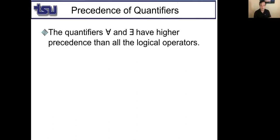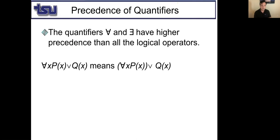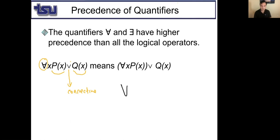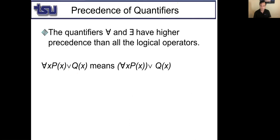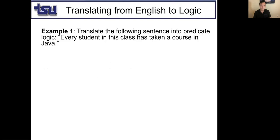Quantifiers ∀ and ∃ have higher precedence than all logical operators. For example, ∀x P(x) ∨ Q(x) means (∀x P(x)) ∨ Q(x), not ∀x (P(x) ∨ Q(x)). You have to be very careful with parentheses.